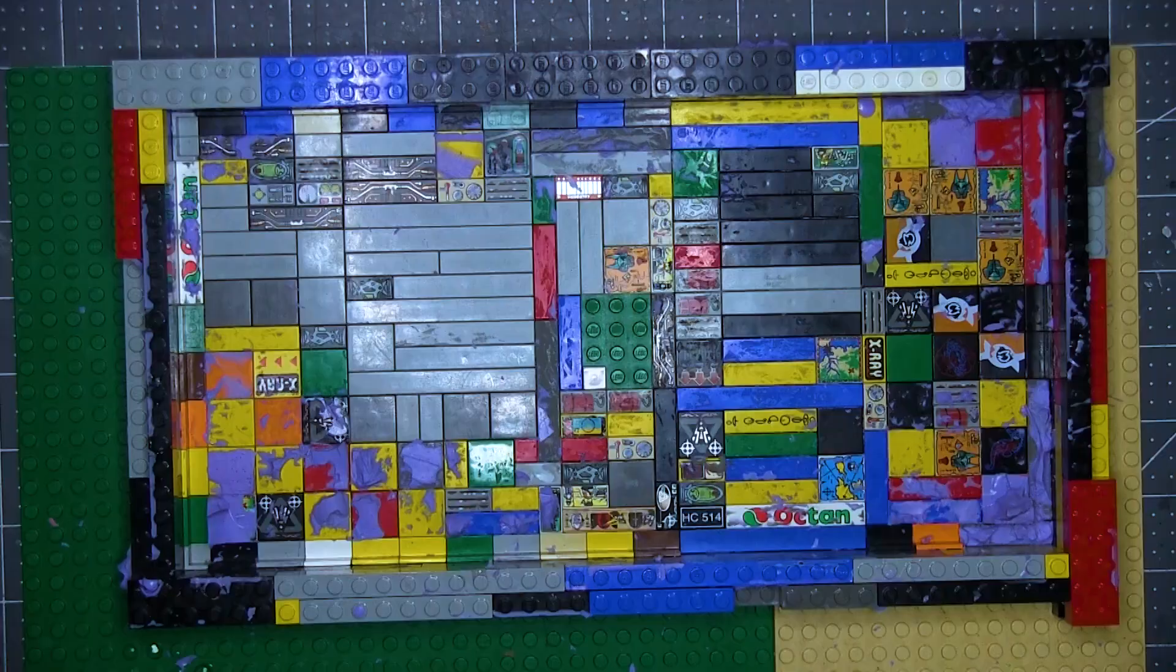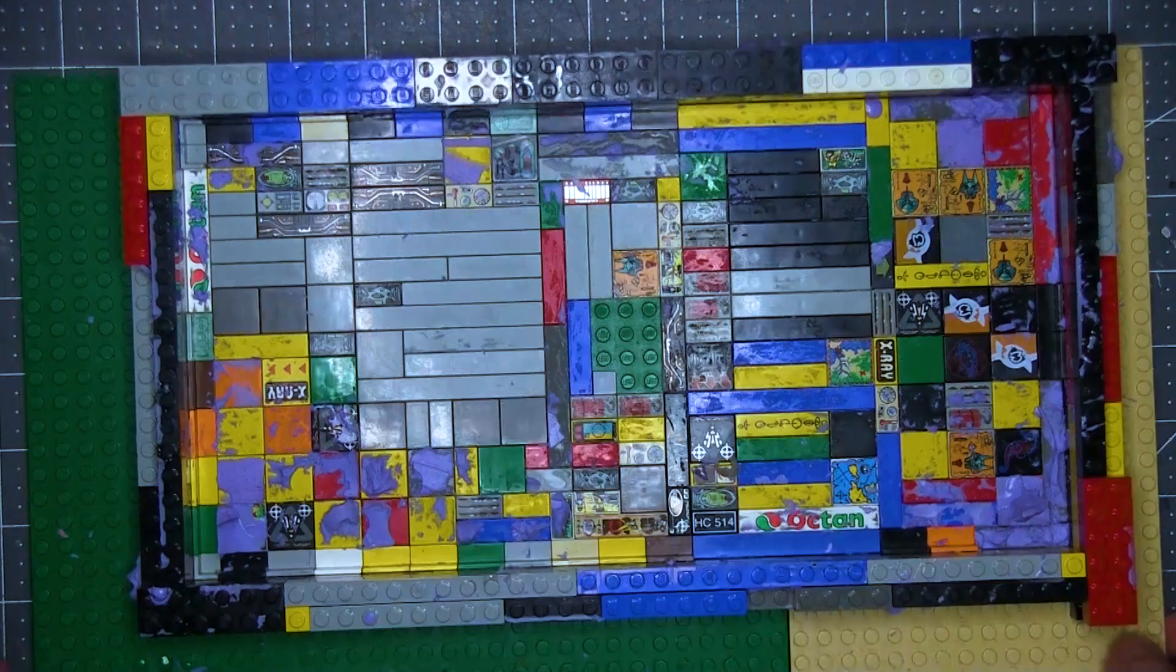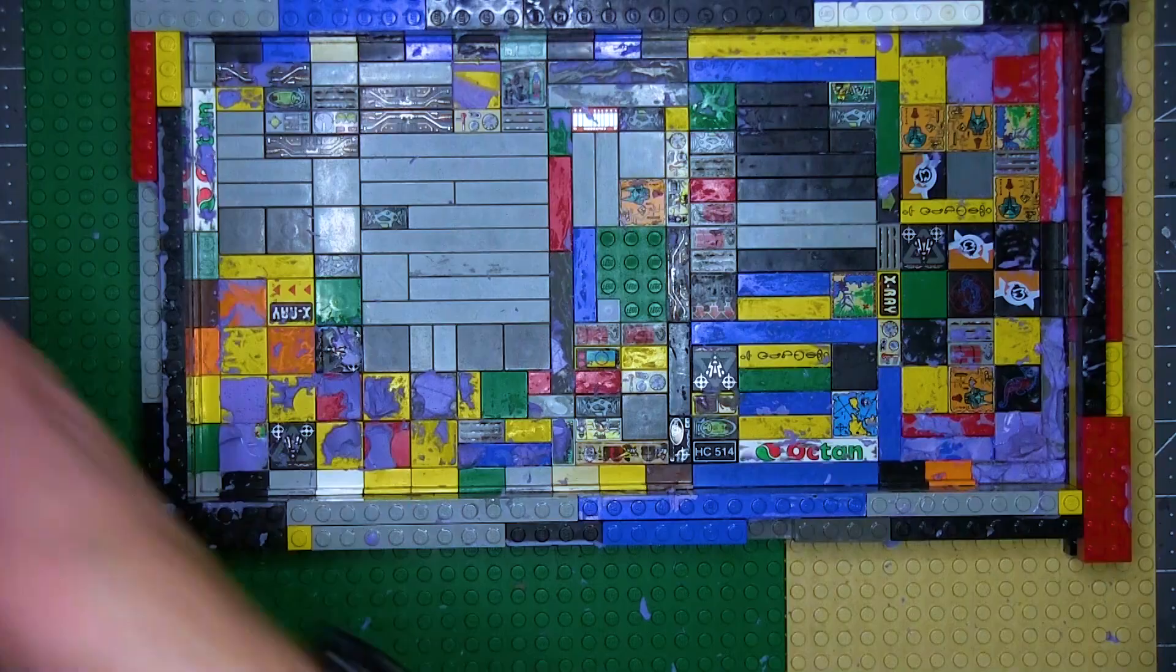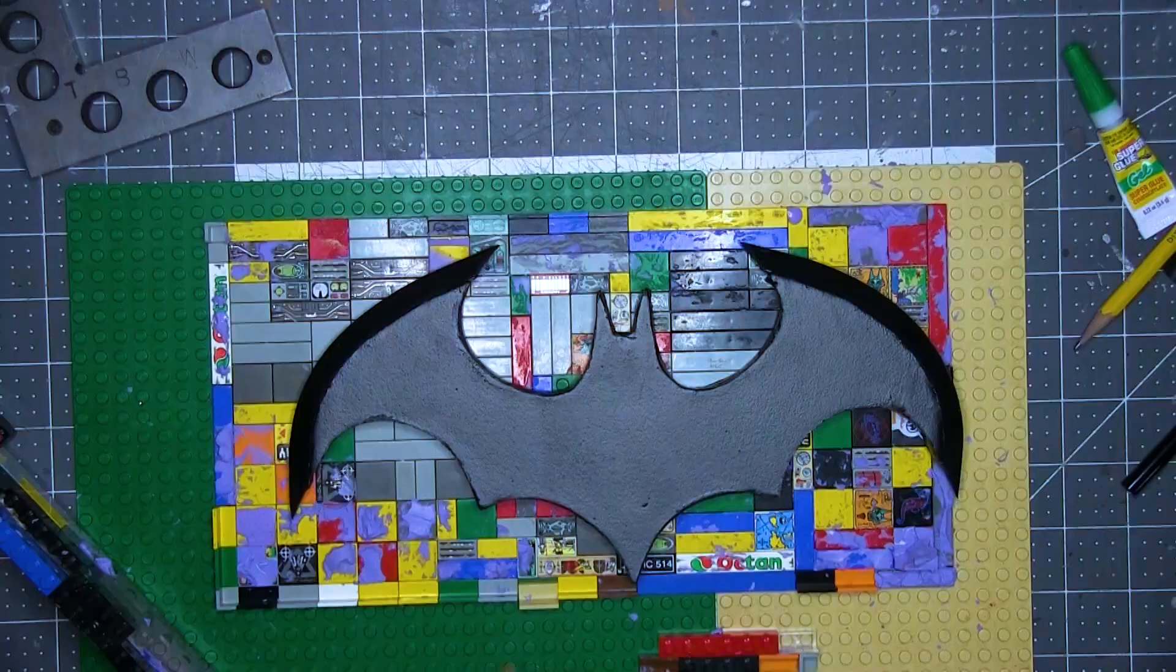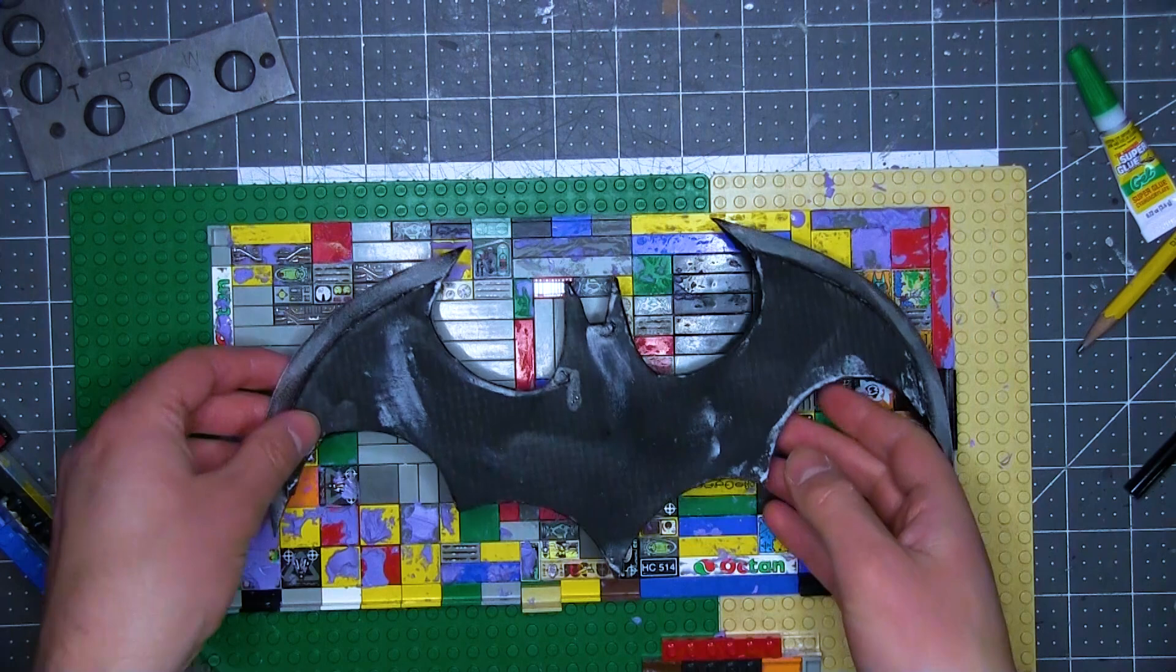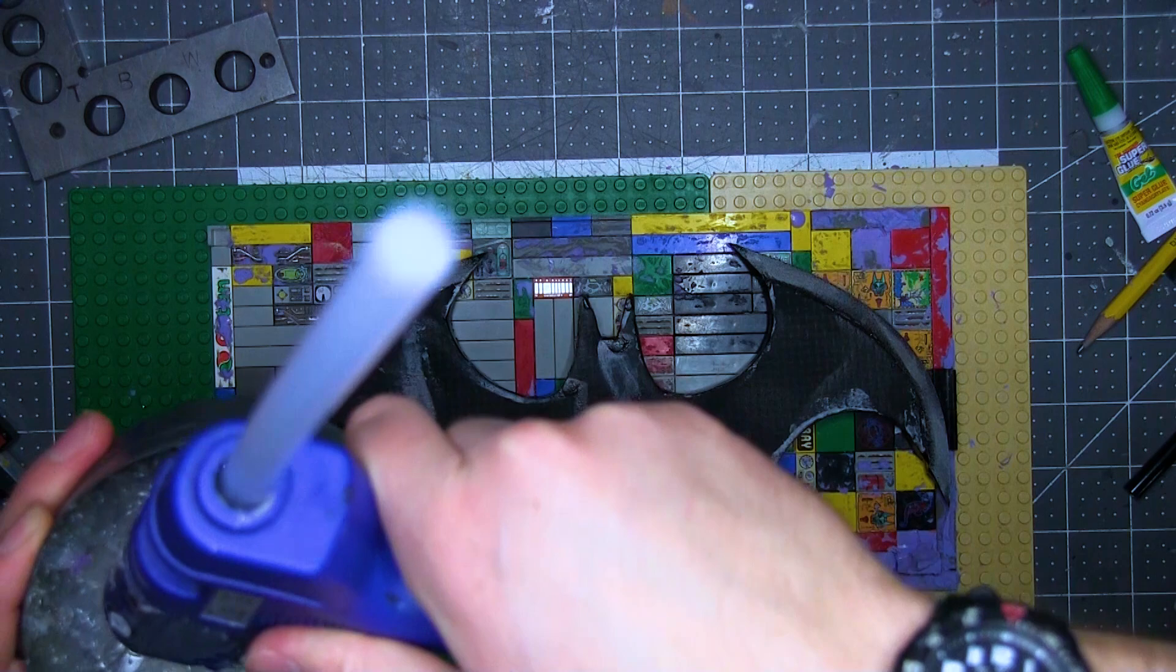Now the plasti-dip is dry on the batarang so I can hot glue it into the mold. I don't want to melt the plastic, so I'm going to place the blob of glue on the batarang first and give it a few seconds to cool off just a little bit before I press it down. You'll notice that I didn't do as many paint layers on the back as I did on the front or the sides, and this is so that the hot glue would have a better grip.